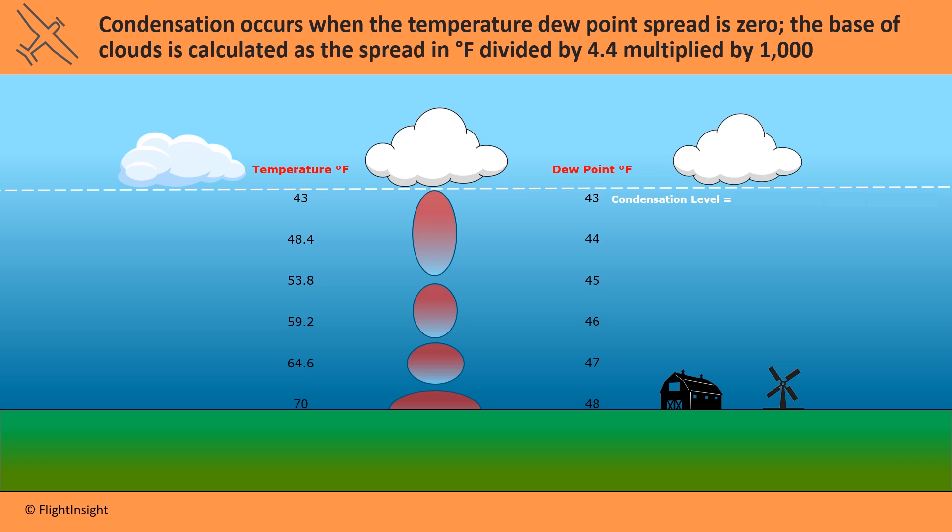In this example, the surface temperature and dew point is 70 and 48 degrees Fahrenheit, respectively. So the spread is 22. If we divide 22 by 4.4, we get 5, or 5,000 feet as the estimated base of the clouds. This is just an estimation, of course, but this is the formula used on the test.